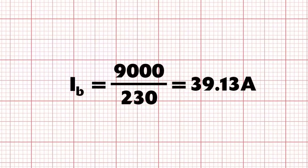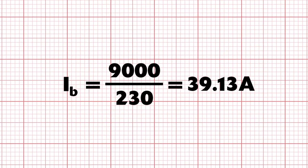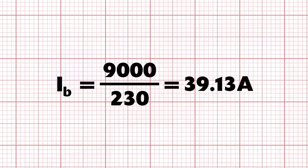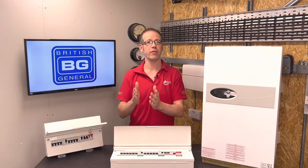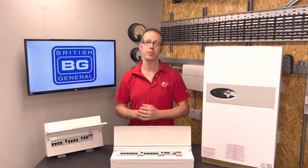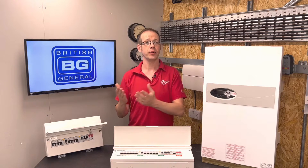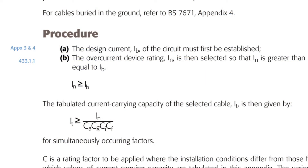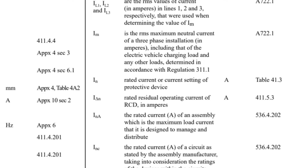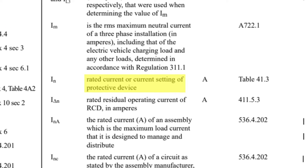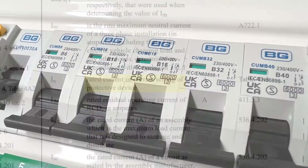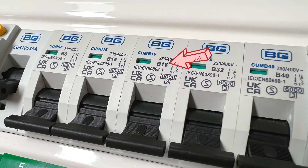In the previous video we calculated our design current, and now it's time to think about what we use it for. The design current is simply how much current the circuit will draw under normal circumstances, and we use this to select the correct protective device. The on-site guide published by the IET states in appendix F that In must be greater than or equal to Ib. In with a lowercase n subscript means nominal current — it's the rated current of the protective device.